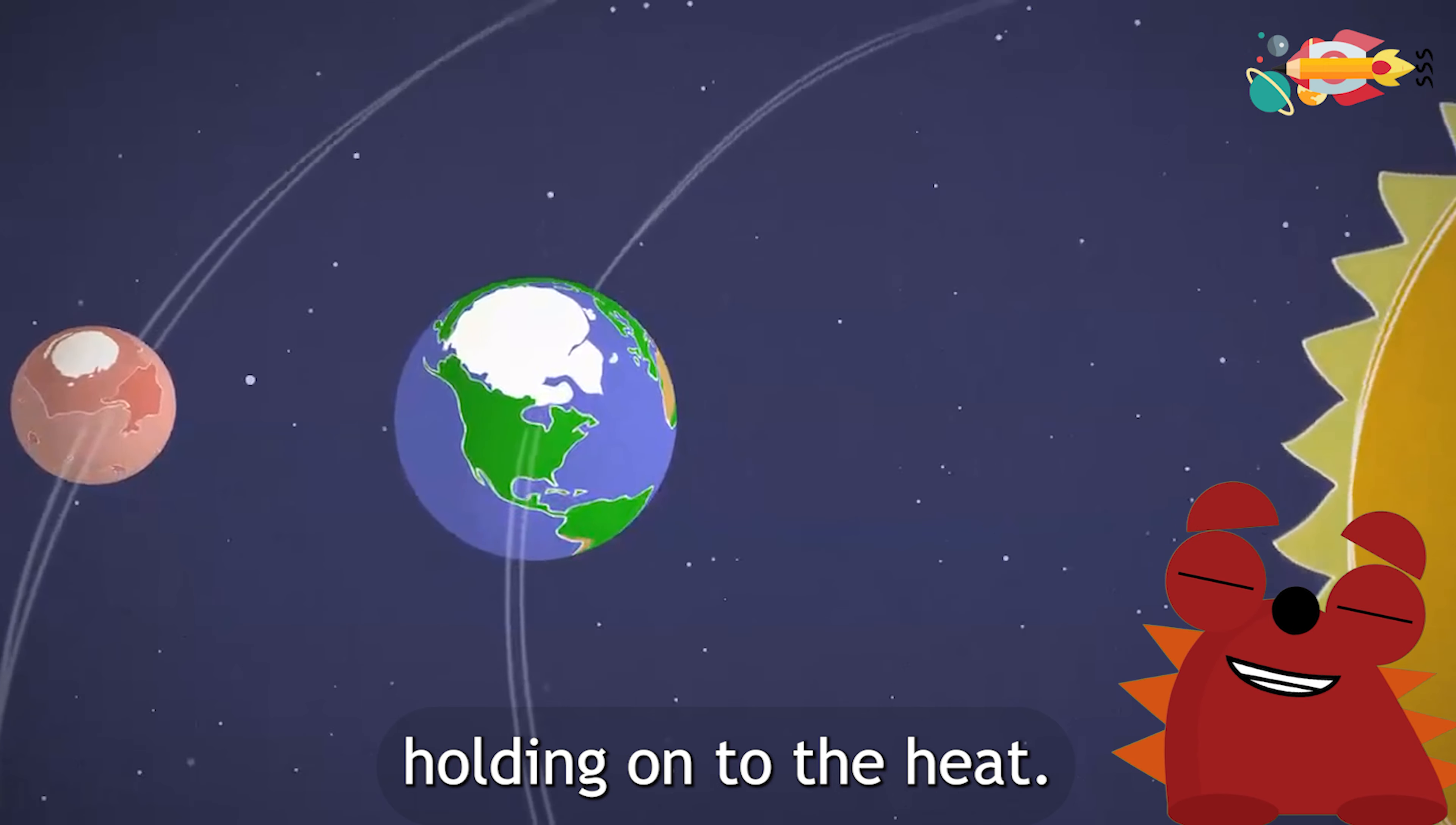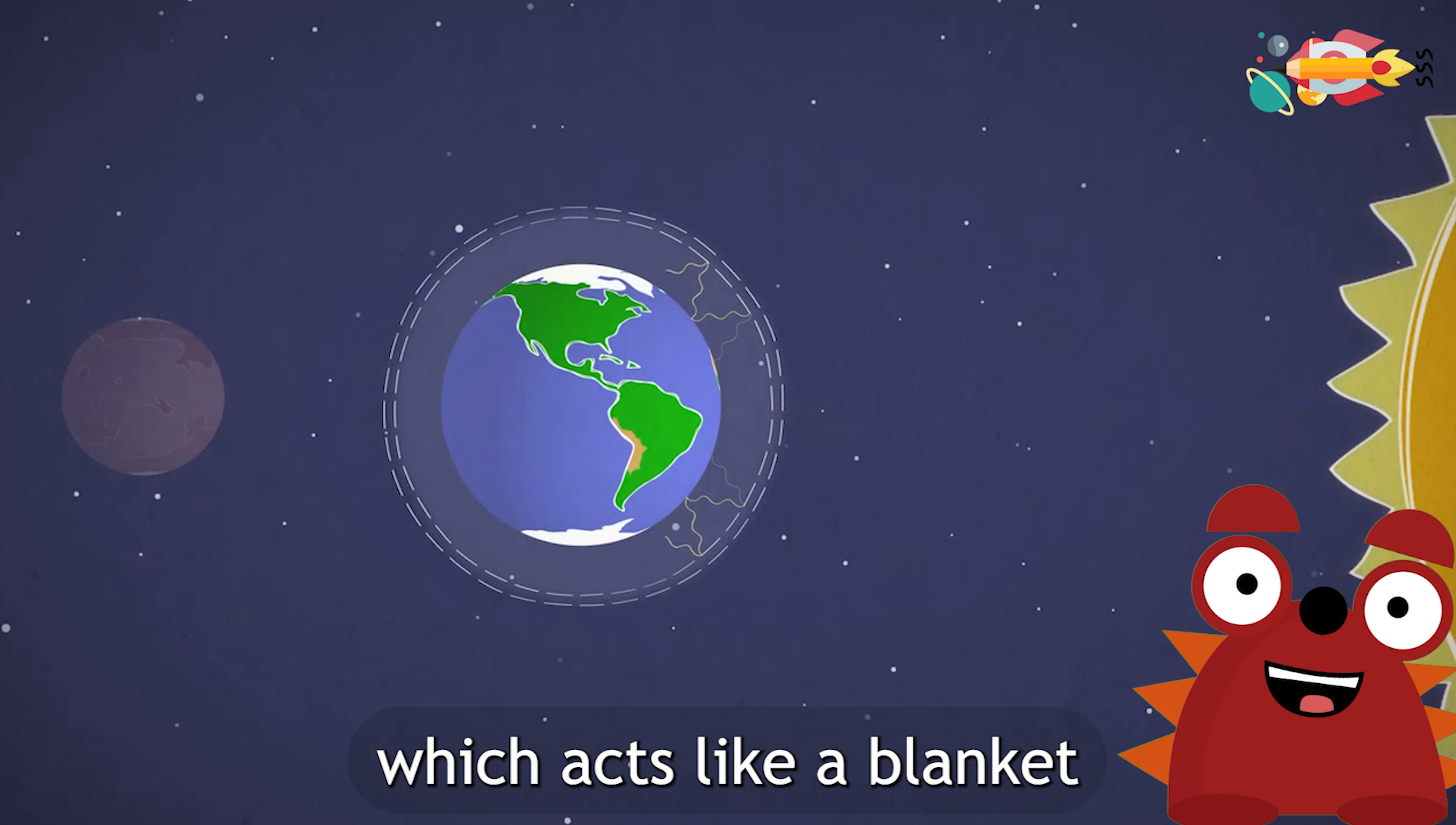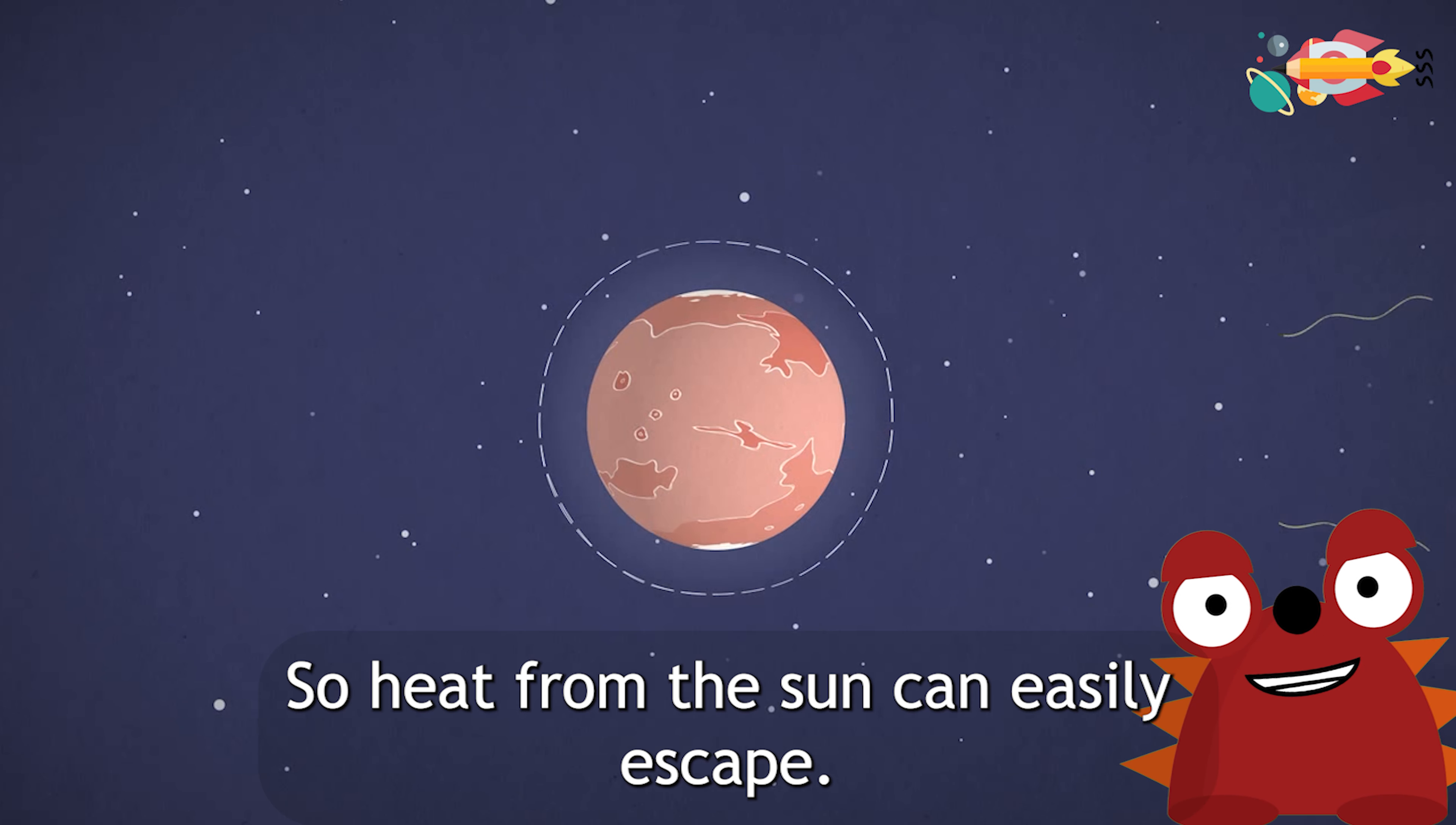Mars also has a hard time holding on to the heat it does get. On Earth, much of the Sun's light gets trapped in our atmosphere, which acts like a blanket to keep our planet warm. But Mars' atmosphere is about 100 times thinner than Earth's, so heat from the Sun can easily escape.